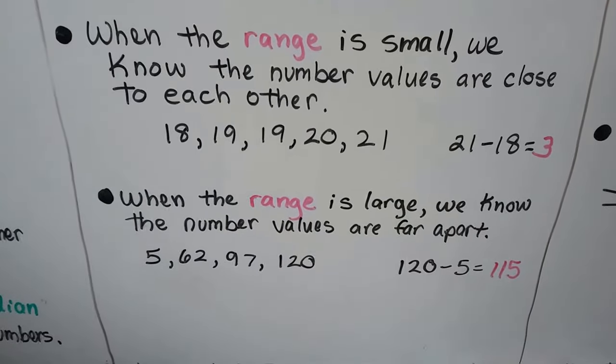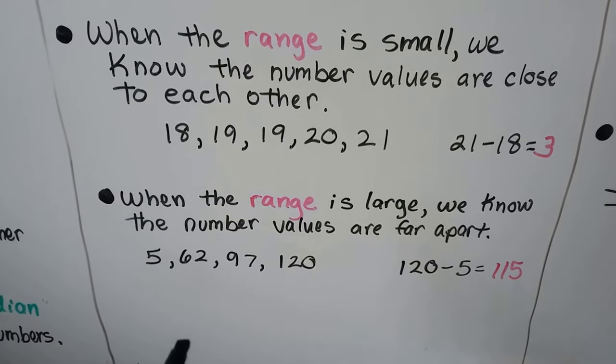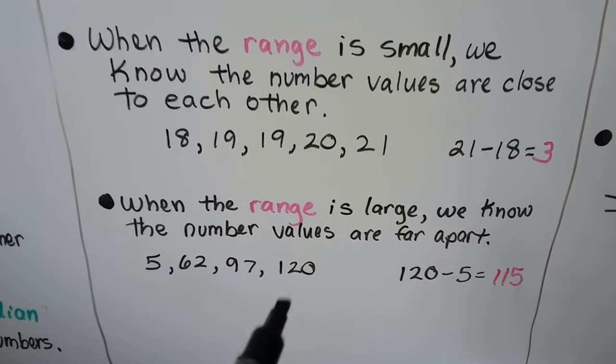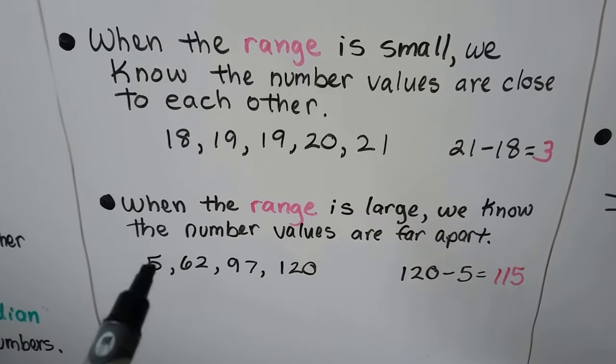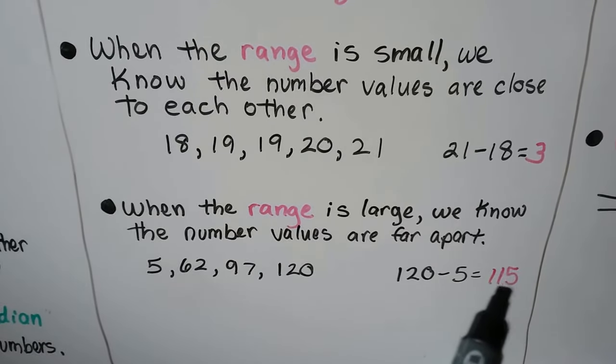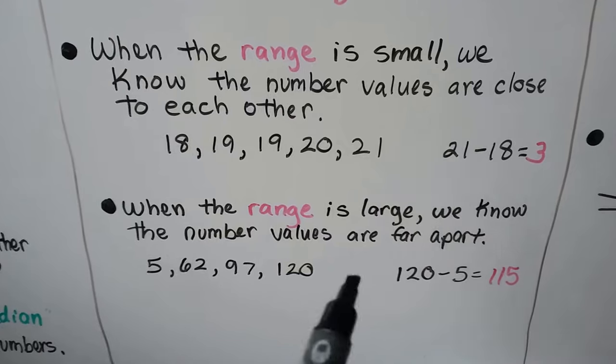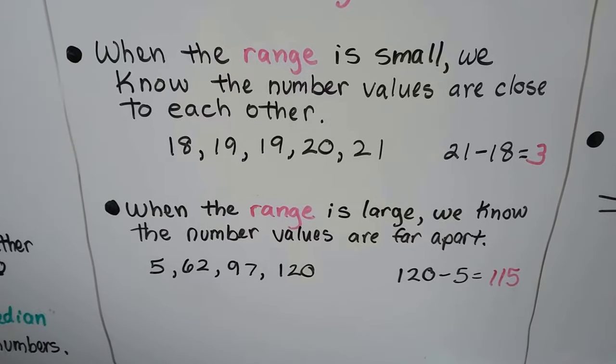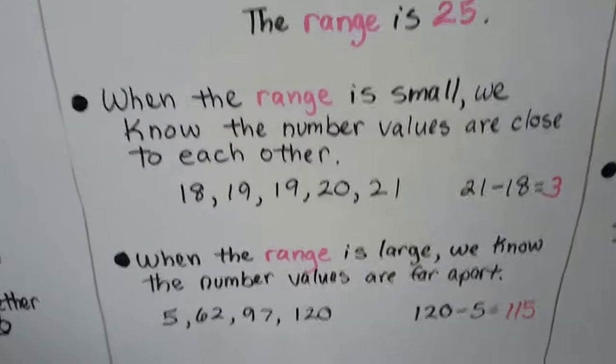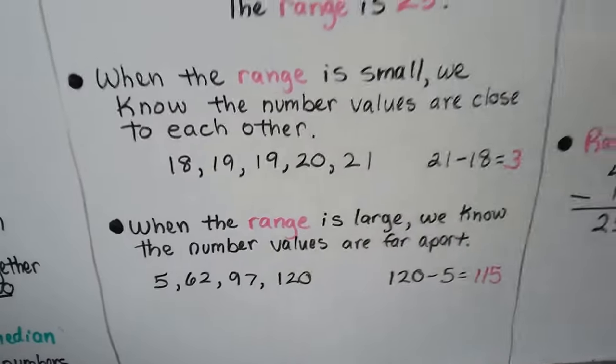When the range is large, we know the number values are far apart. We have a 5, a 62, a 97, and a 120. We take the 120 and subtract 5. We get 115. And because that's so much larger, we know that these number values are very far apart from each other because that is large. It could be in the thousands even. Then we would know the number values really differ.